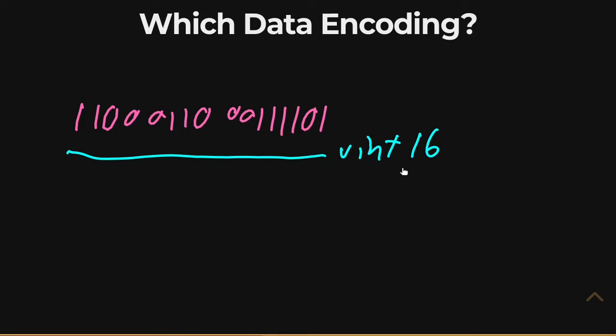At the same time, we could take the same string of sequence of zeros and ones, and break it up instead into two uint 8s. One uint 8 here, and another after it.